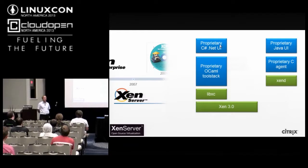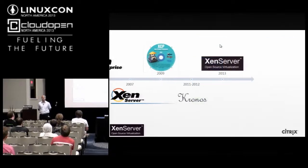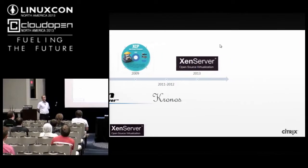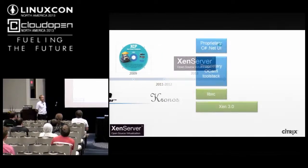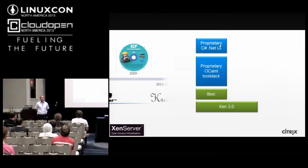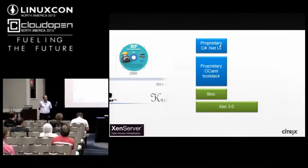We also put on a .NET UI on top — ZenCenter — because we were targeting the Windows market. Again, that was proprietary. Originally the OCaml was proprietary as well, and again the way the system was put together used plenty of open source pieces. CentOS 5, up to about 5.7 now, was our basis.